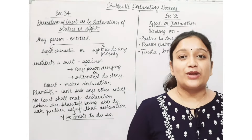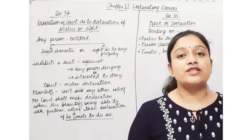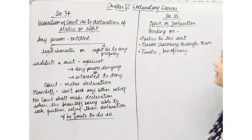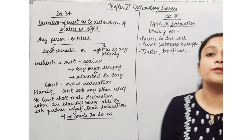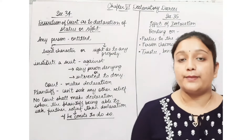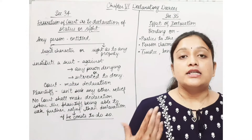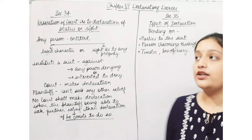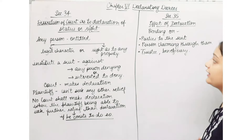Hello people, hope you all are doing well. Today we will discuss Chapter 6 in the Specific Relief Act, which tells us about the Declaratory Decree. There are only two sections — Section 34 and Section 35.